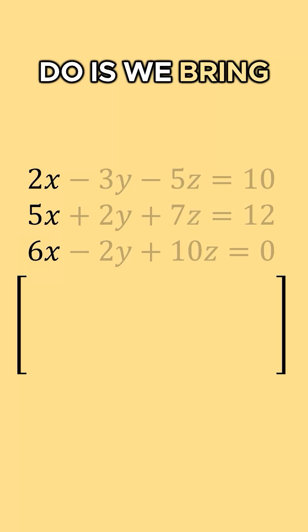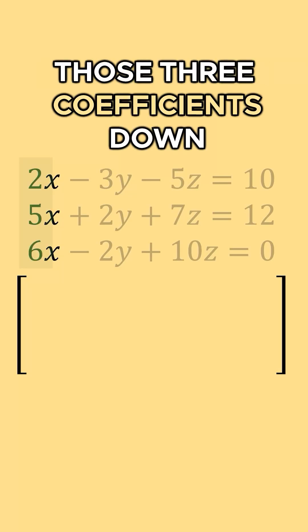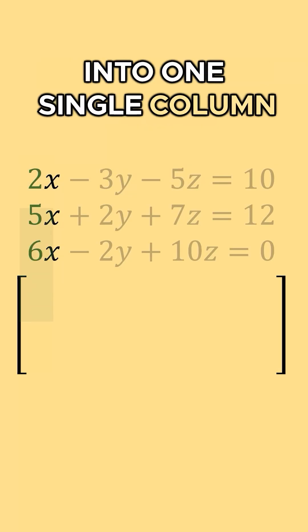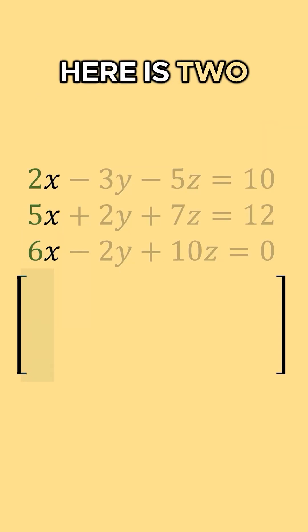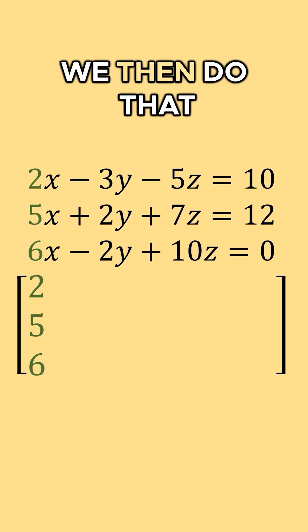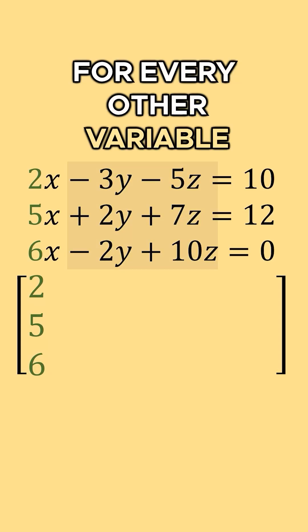And what we do is we bring those three coefficients down into one single column. So I bring it down here as two, five, six. We then do that for every other variable.